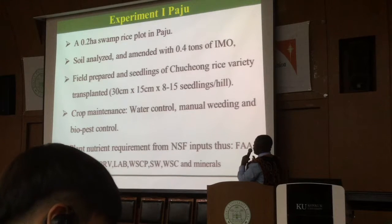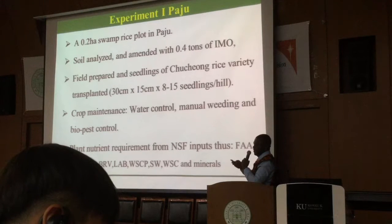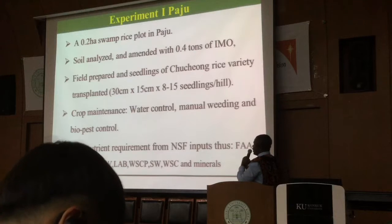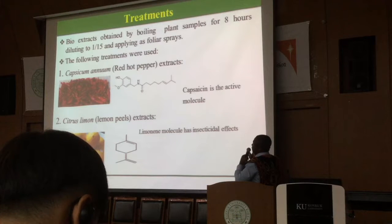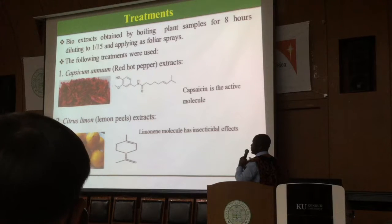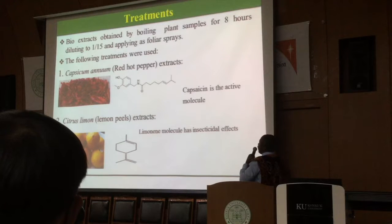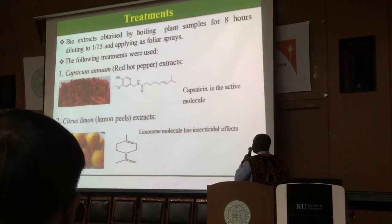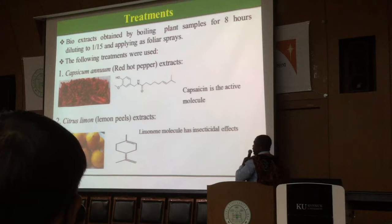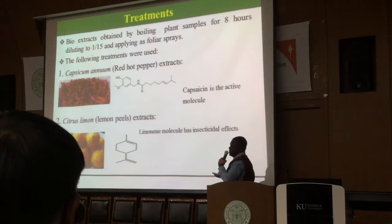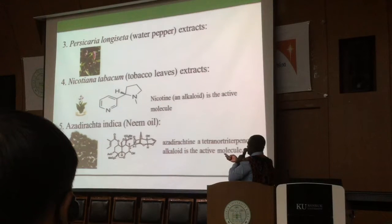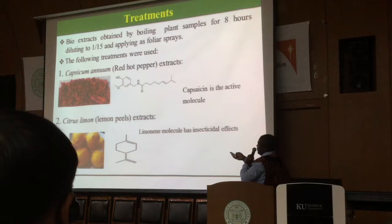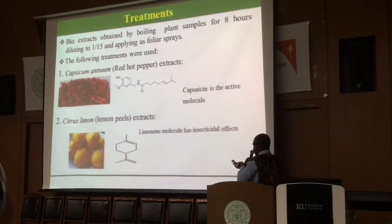In experiment one, I will go ahead and present the key points of the experiment. We used bio extracts which were obtained by boiling plant samples for eight hours, diluting them to a 1:15 ratio, and applying them as foliar sprays. The plant extracts used included red pepper and lemon juice, from which we obtained the insecticide.